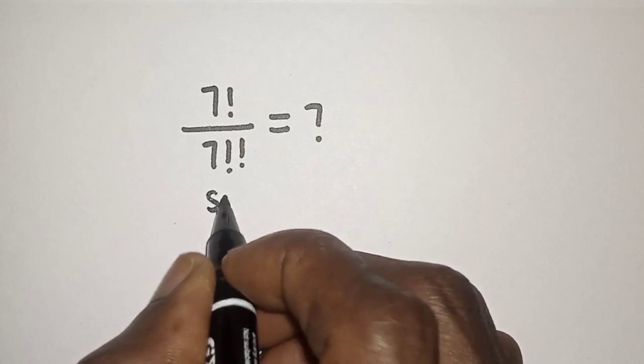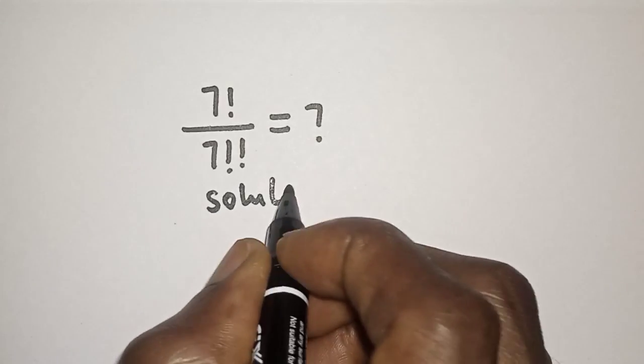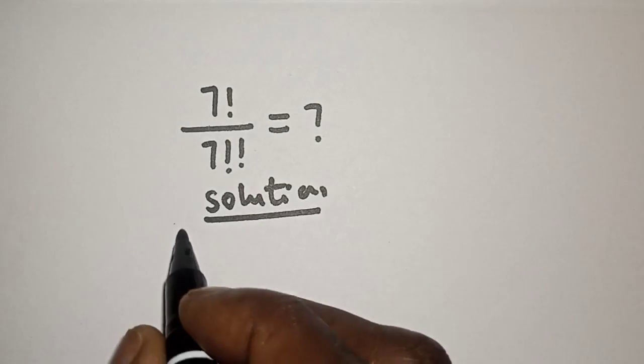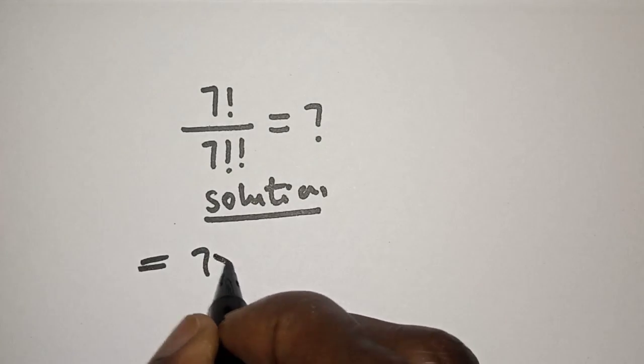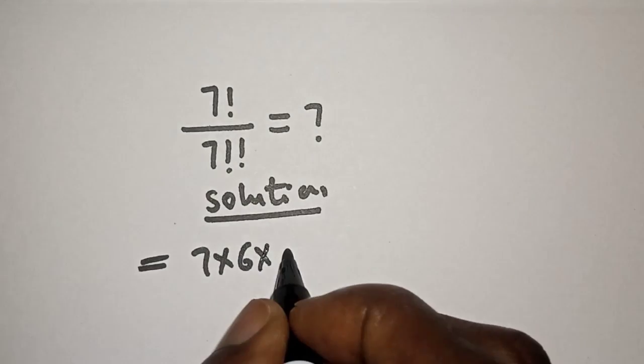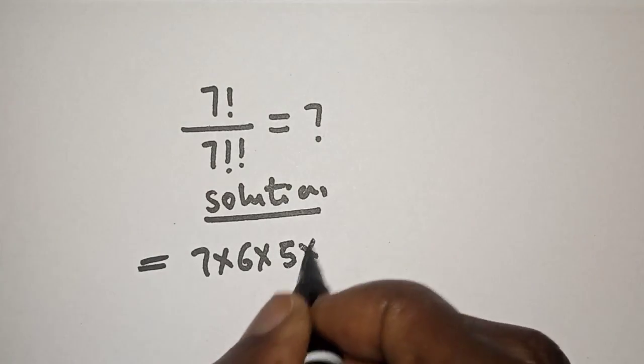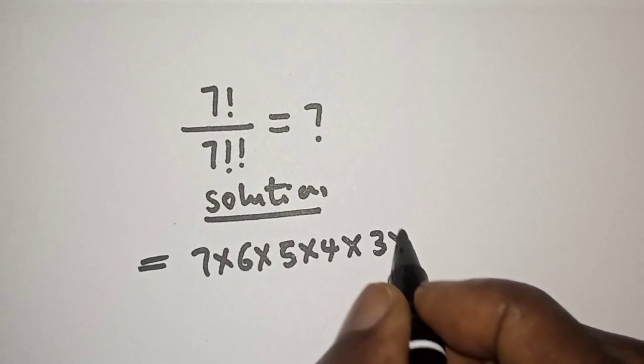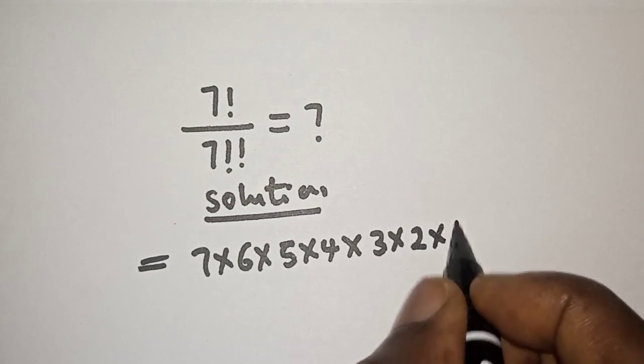Solution: We have 7 factorial can be written as 7 multiplied by 6 multiplied by 5 multiplied by 4 multiplied by 3 multiplied by 2 multiplied by 1.